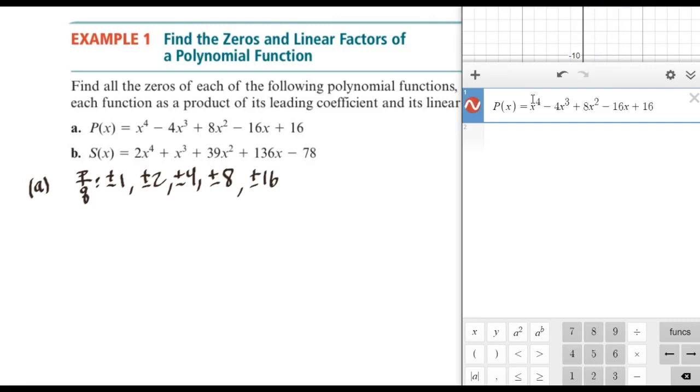Okay, so I've entered our new function in here. And I'm going to evaluate at the possible P over Qs. And so we're going to look at P of negative 1 first. And as you can see here, we have 45. That's no good. So I'm going to just backtrack and just find the ones that work. So negative 1 does not work. P of 1 gives us 5. That does not work.